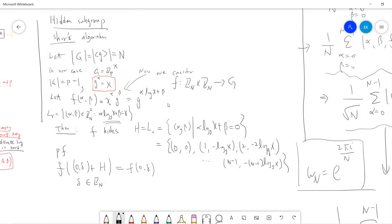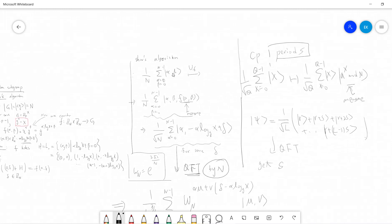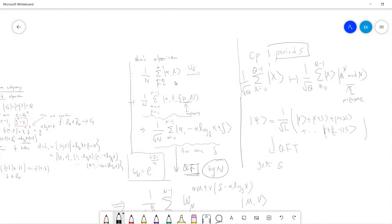The standard quantum computing starts from all the states, all the possible states, and you apply U_f, the oracle. This oracle will give you f(alpha, beta). You get alpha, beta and f(alpha, beta), then you measure the registered state.